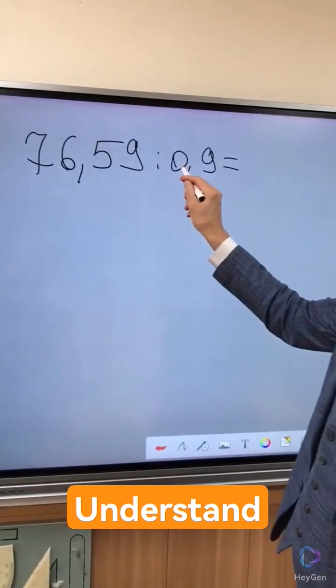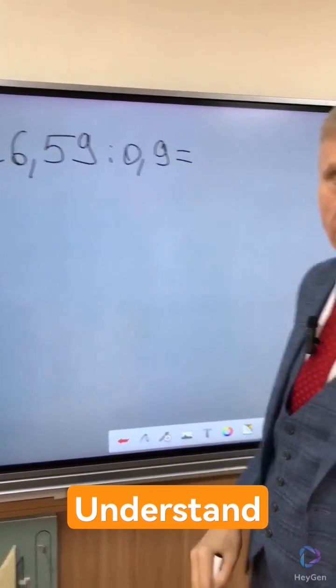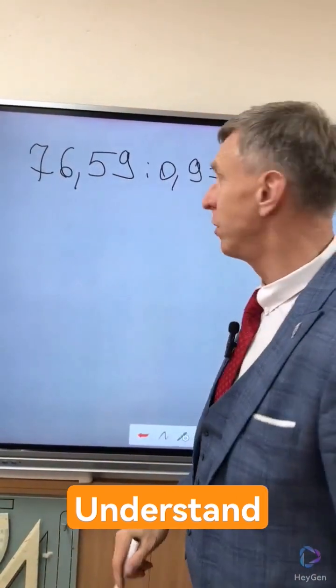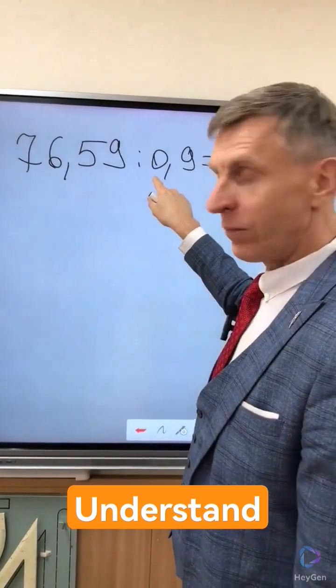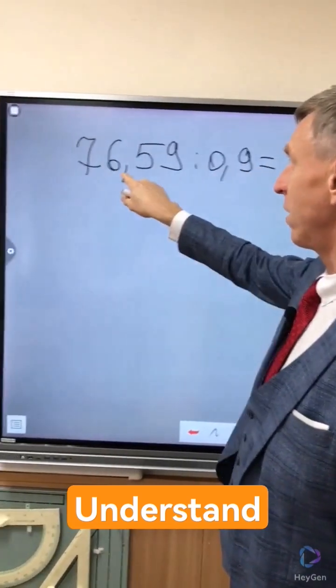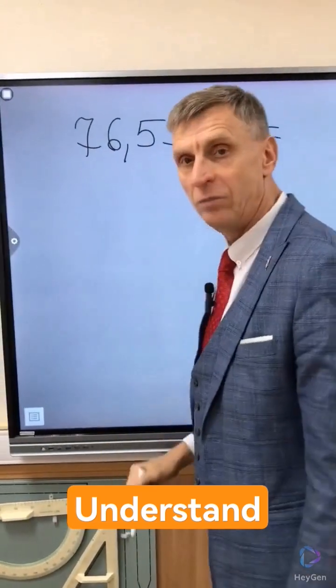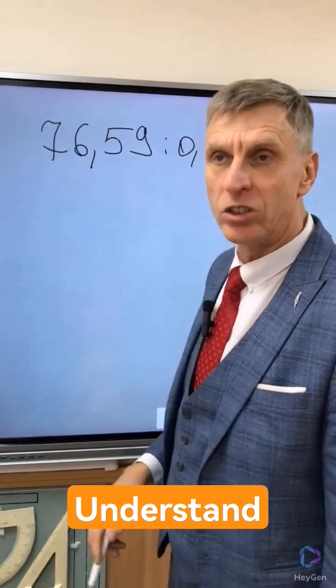We need to do this first so that the divisor becomes a whole number here. Everyone on earth can divide by a whole number. For this, we will move the comma to the right by one digit, and in the dividend also by one digit. In the big account, we multiplied the divisor and the dividend by 10.